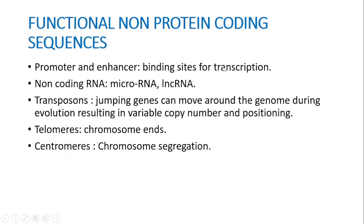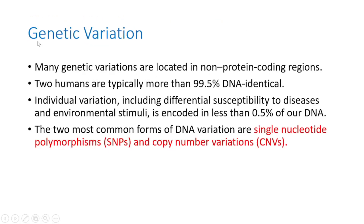Non-coding RNAs such as microRNAs and long non-coding RNAs will be discussed in further slides. Transposons are jumping genes which can move around the genome during evolution, resulting in variable copy number and positioning. Telomeres are present at chromosome ends and centromeres help in segregation of the chromosome.